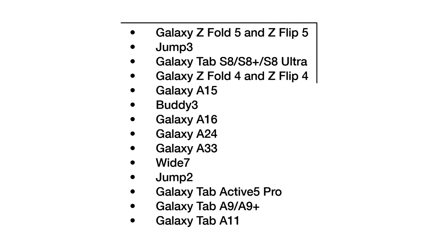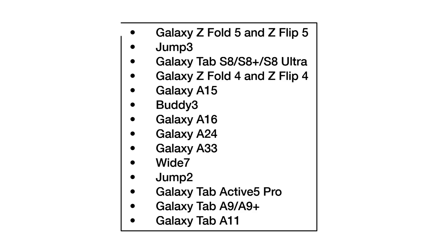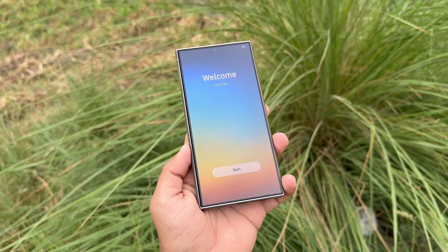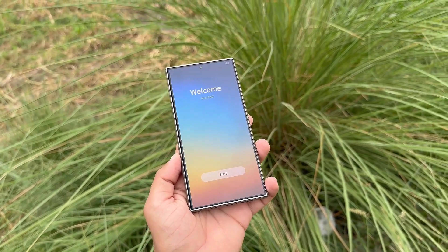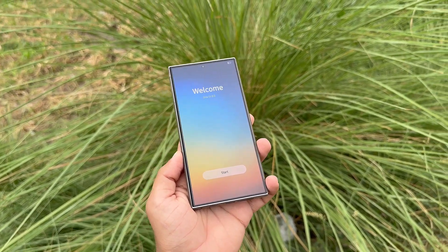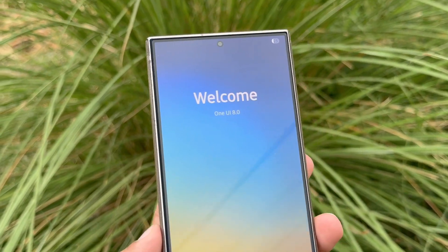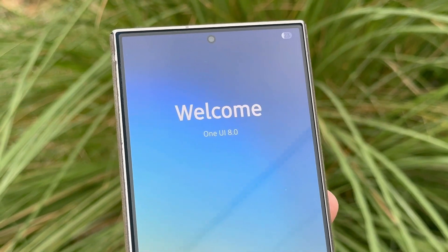November 2025 brings updates to the Galaxy Z Fold 5 and Flip 5, Galaxy Tab S8 series, Galaxy Z Fold 4 and Flip 4, Galaxy A15, A16, A24, A33, Galaxy Tab Active 5 Pro, Galaxy Tab A9 and A9 Plus, and Galaxy Tab A11. Interestingly, the roadmap skips a few models like the Galaxy S21 Fan Edition, likely due to pending confirmations. These devices should still appear in the global rollout schedule, which Samsung is expected to publish soon alongside possible updates to the Korean timeline.